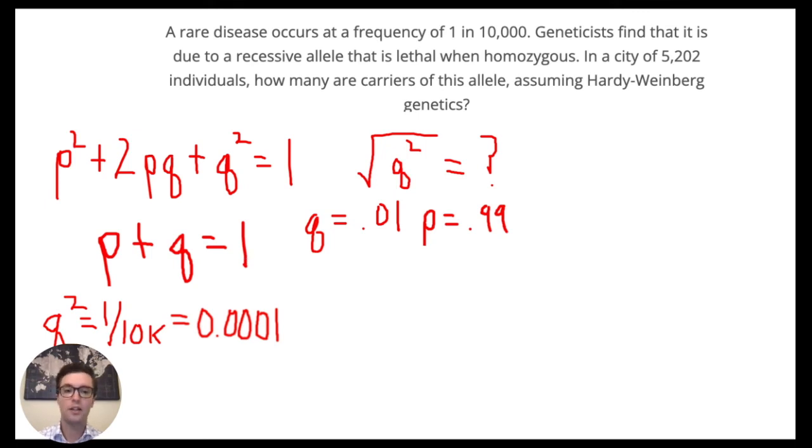All of that said, the question is asking us to find the number of carriers of the allele in a city of 5,202. So in order to do that, we need to utilize this middle portion of the top equation, 2pq, and find that frequency. So we just plug p and q into that. I substitute 1 for 0.99 just to make the mental math easier, and it will be close enough to the answer choice. So 2 times 1 times 0.01 equals 0.02.